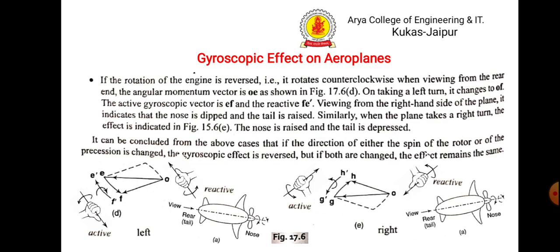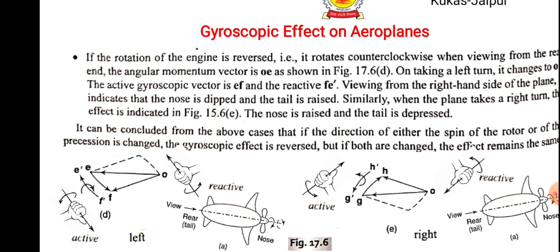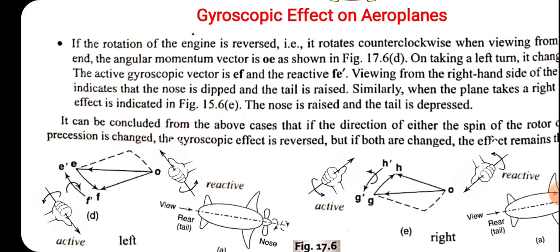But what will happen when it moves anticlockwise? Then for the anticlockwise, the reactive couple will be when it takes the left turn, T dash to E dash.